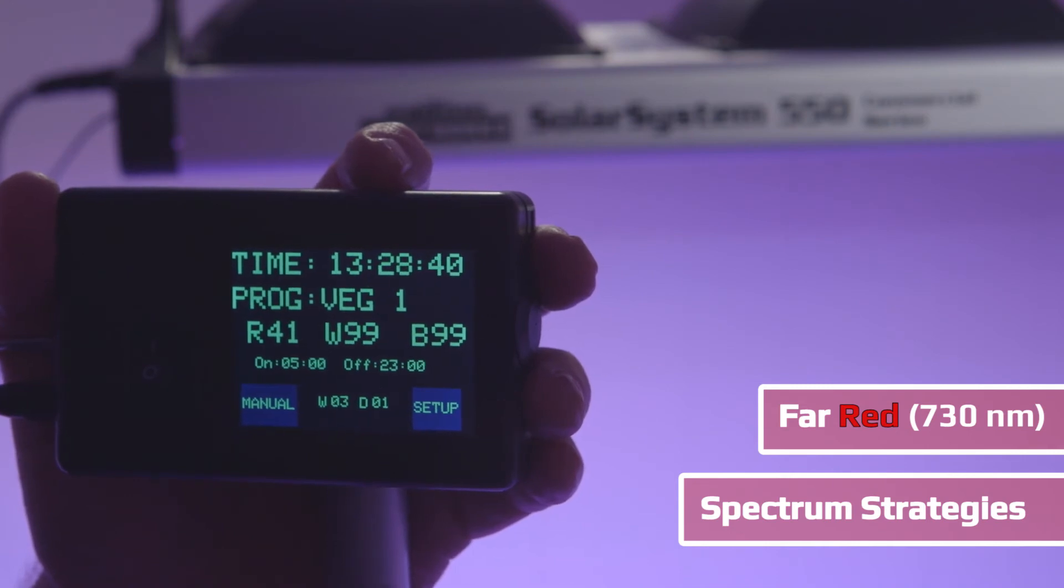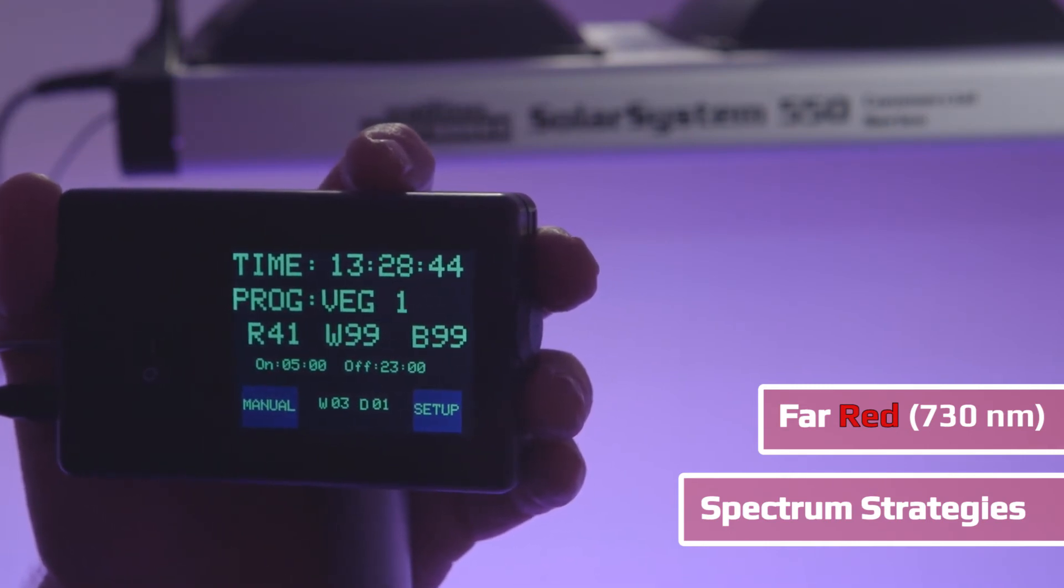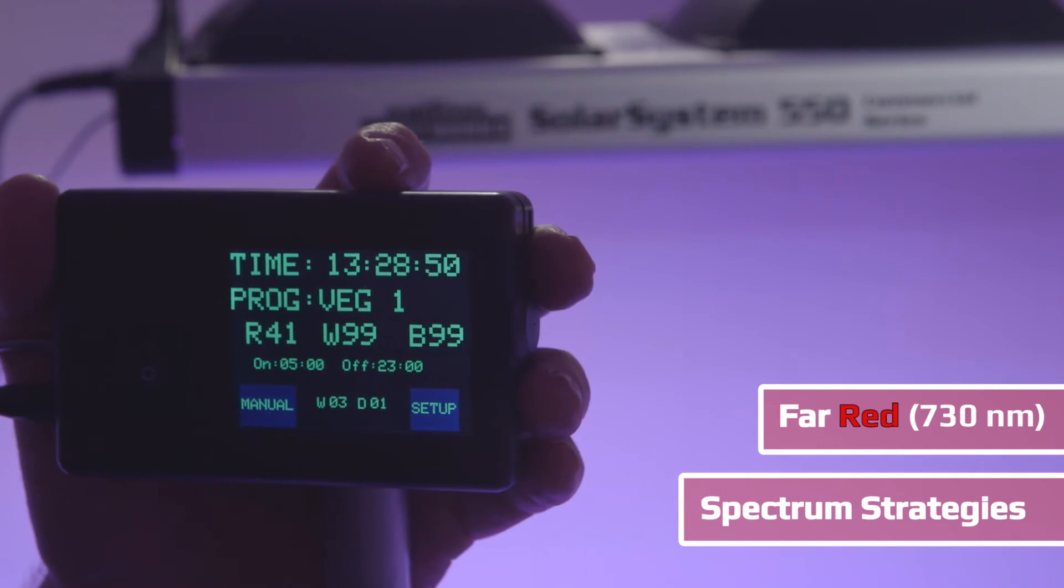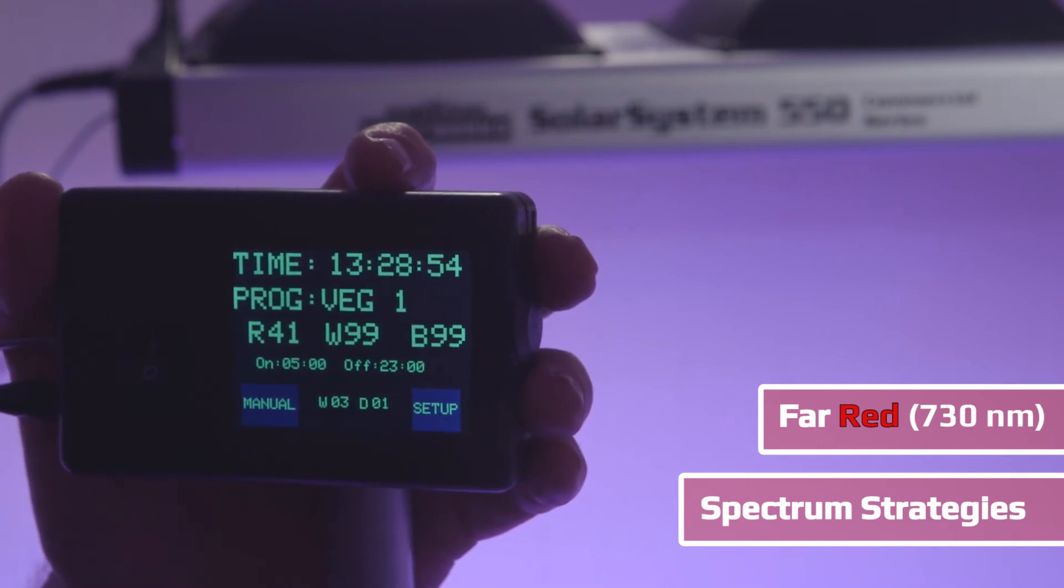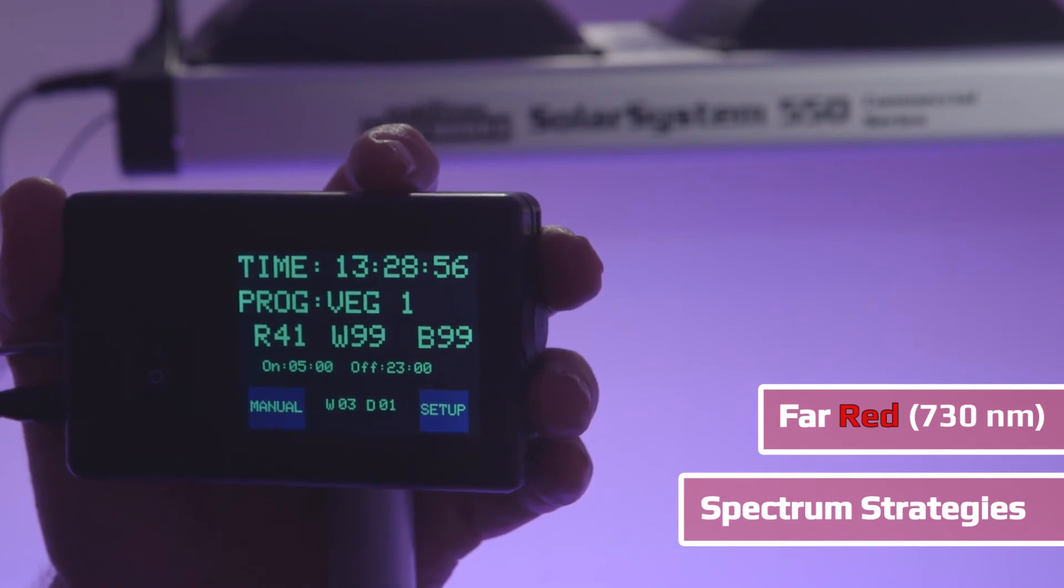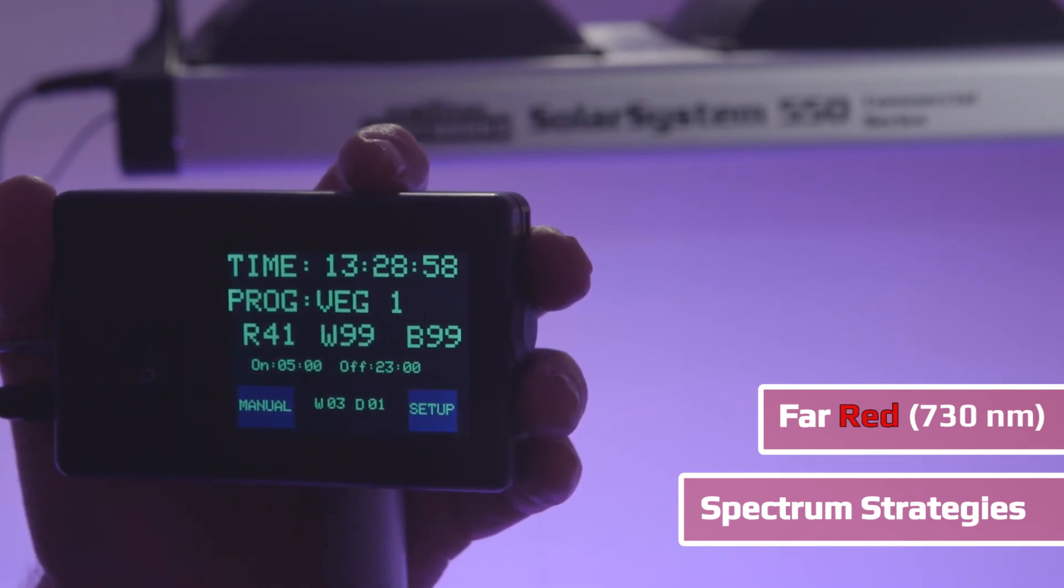Normally when the sun goes down, this takes about two hours for the plant to shift to nighttime mode and the metabolism it does at night. By shining far red for 10 minutes at the end of the light cycle and 10 minutes after, you can flip the plants almost immediately into nighttime mode.